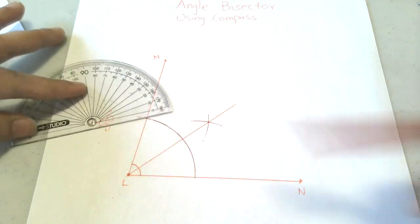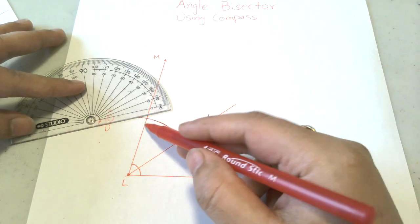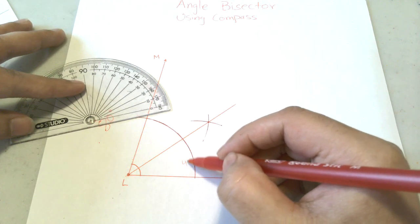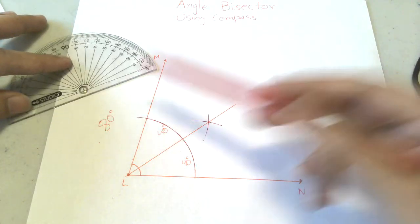I'll measure my angle again. Since the whole angle is 80 degrees, then half should be 40 degrees. These two should be 40 degrees each because 40 plus 40 makes 80 degrees.